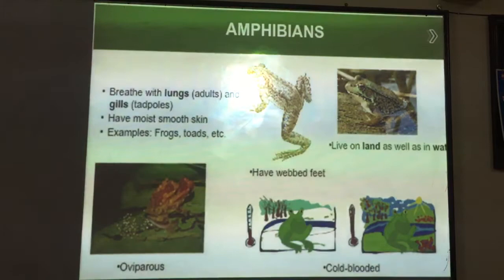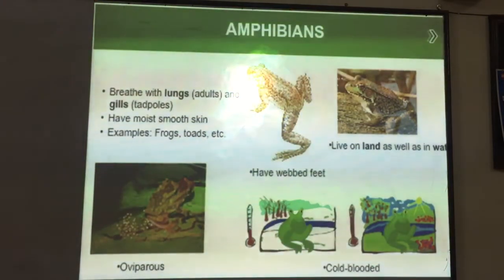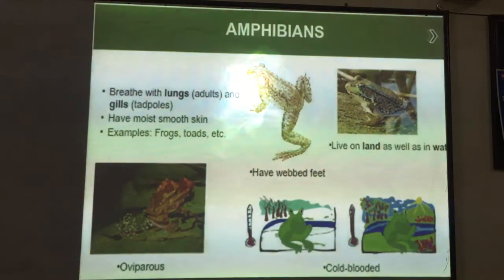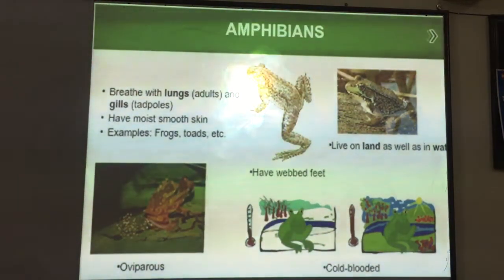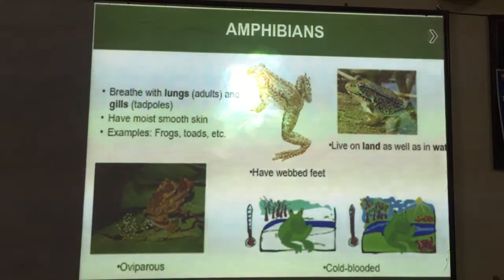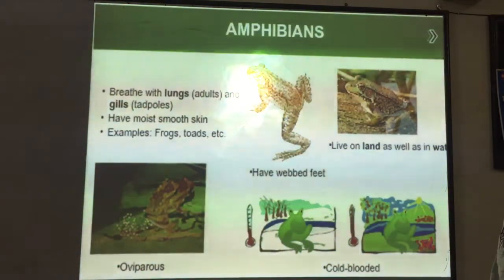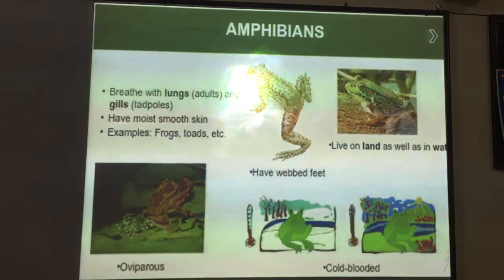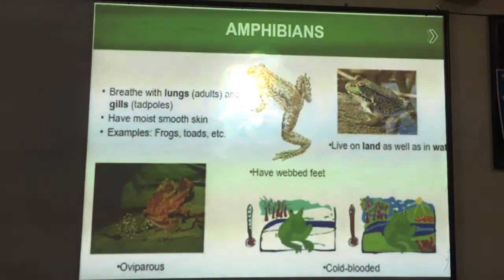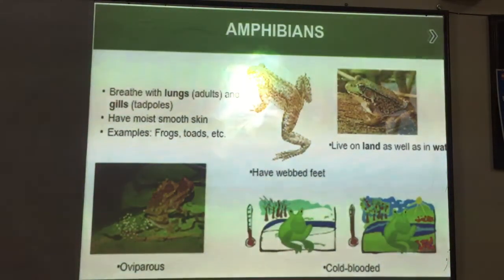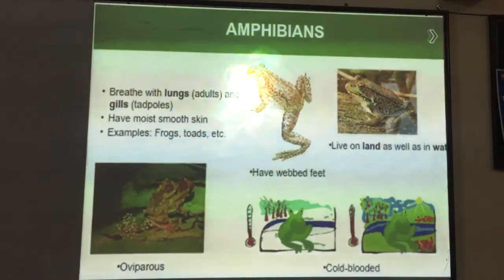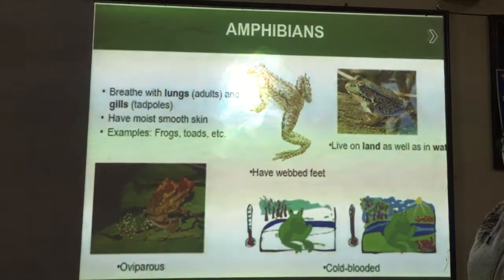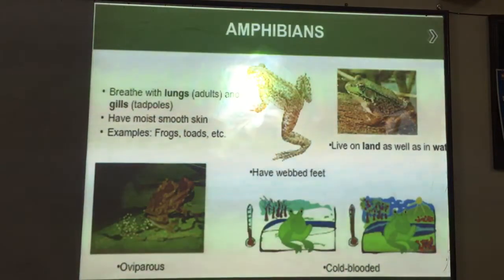Amphibians are oviparous, that means they are egg-laying animals. Both fishes and frogs lay a number of eggs. Amphibians are also cold-blooded animals, meaning they also do not have a constant body temperature.